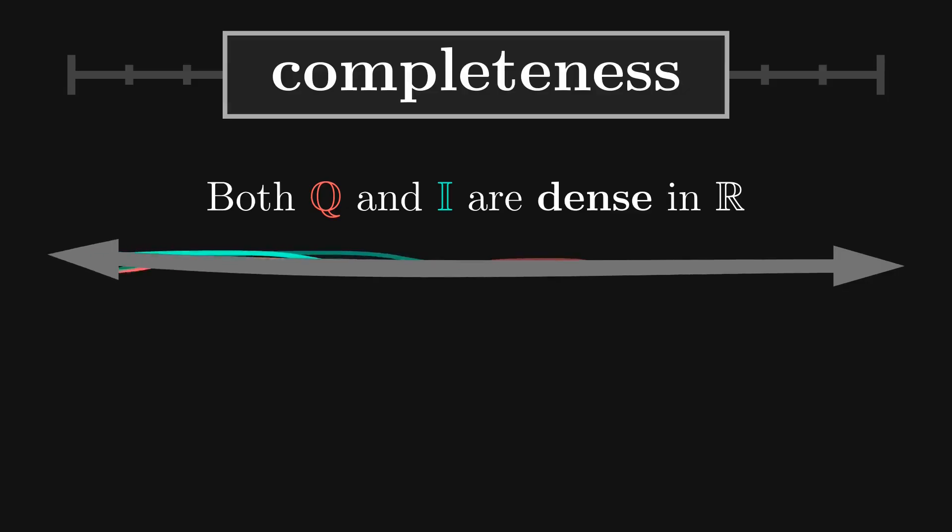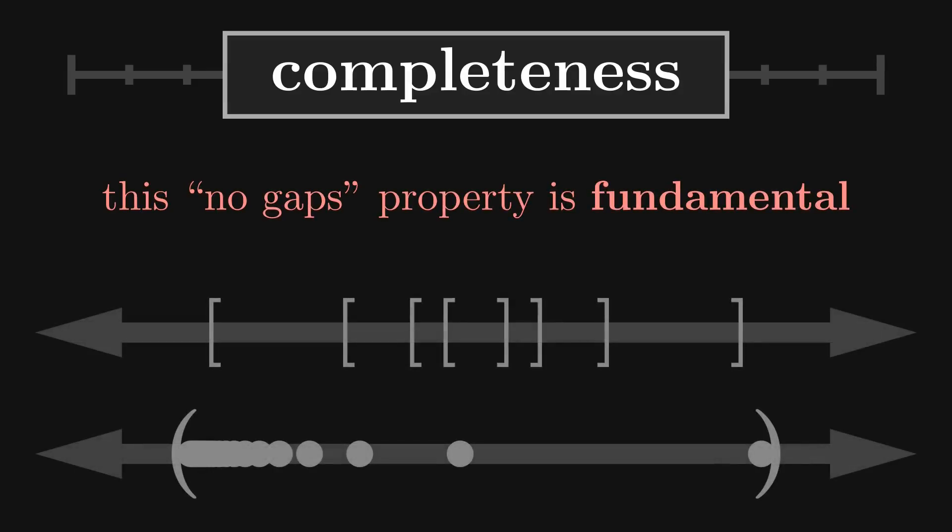I want to clarify that we have already declared that between any two real numbers is a real number. And again, this isn't something that we proved, this is just part of what makes the real numbers what they are.